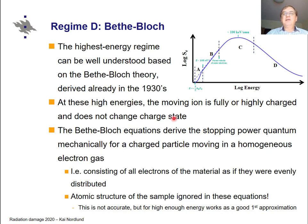I will start with the best known one: the high energy limit, regime D. The reason this is the best understood is that there is a theory which can describe it with high accuracy — the Bethe-Bloch theory, derived already in the 1930s. It's not exact of course, and there are corrections like the so-called Barkas corrections for inertial effects, but the basic picture is pretty clear.